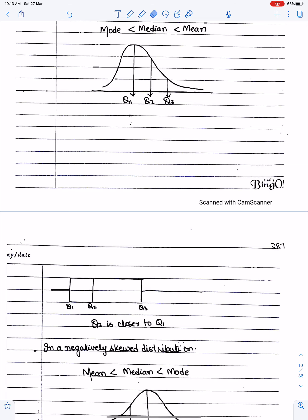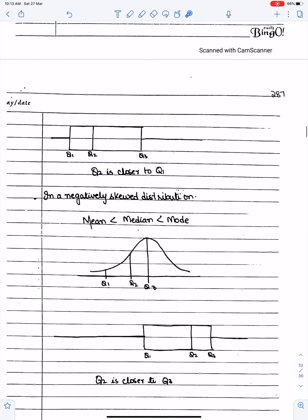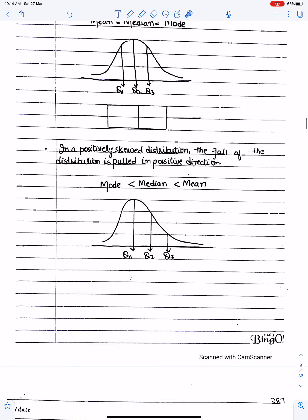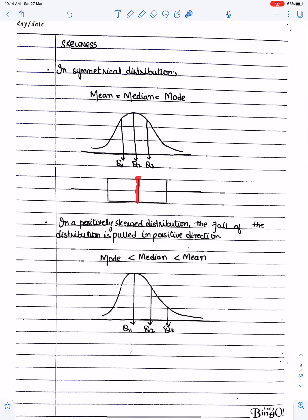Positively skewed means low averages. Negatively skewed is the opposite: the median is close to Q3, the distribution is negatively skewed, and there is a long stretching tail on the left side. When the median is close to Q1 — positively skewed; when the median is close to Q3 — negatively skewed; when the median is exactly at the center with equal whisker lengths — perfectly symmetrical.